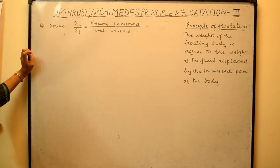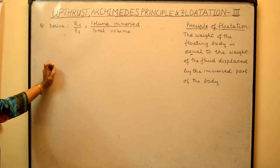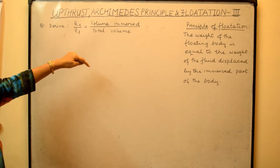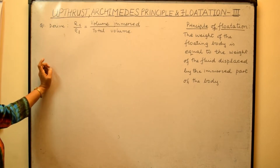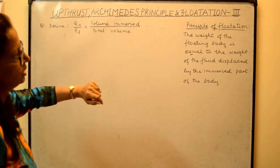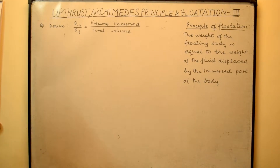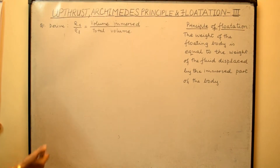Flotation begins with the concept of flotation. When the body floats, what is happening? The weight of the body, which acts vertically downwards, is going to be supported by the upward force, which is the upthrust. So the principle of flotation: the weight of the floating body is equal to the weight of the fluid displaced by the immersed part of the body. The weight of the fluid displaced by the immersed part is also the upthrust.